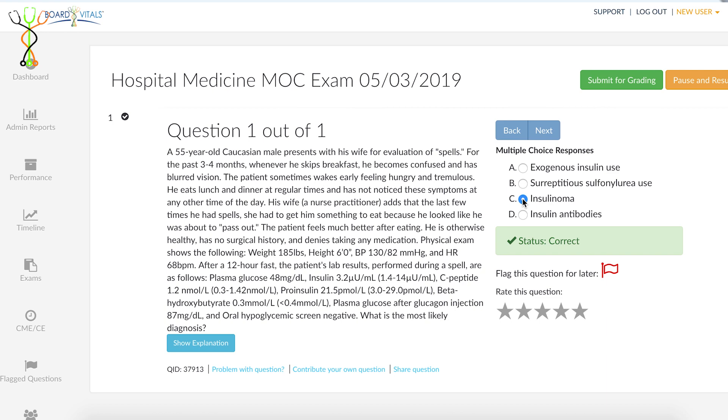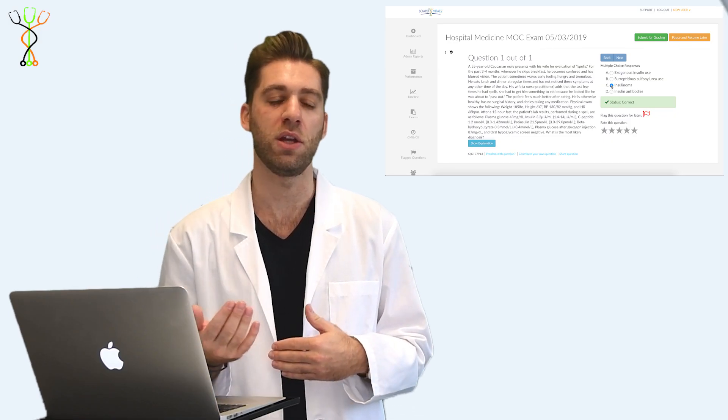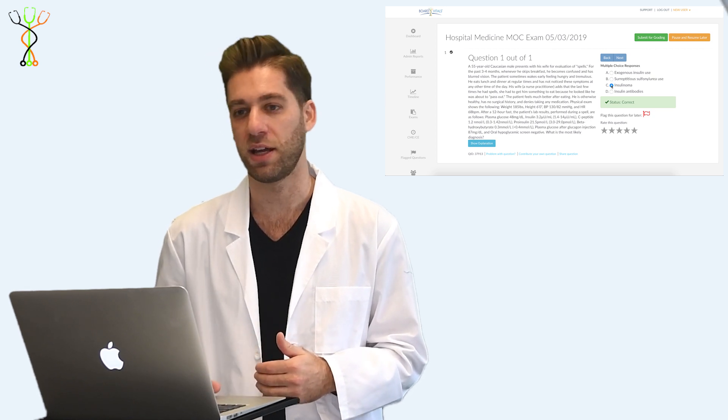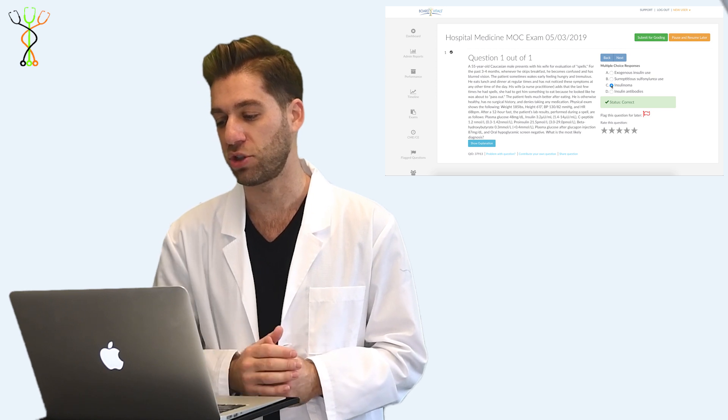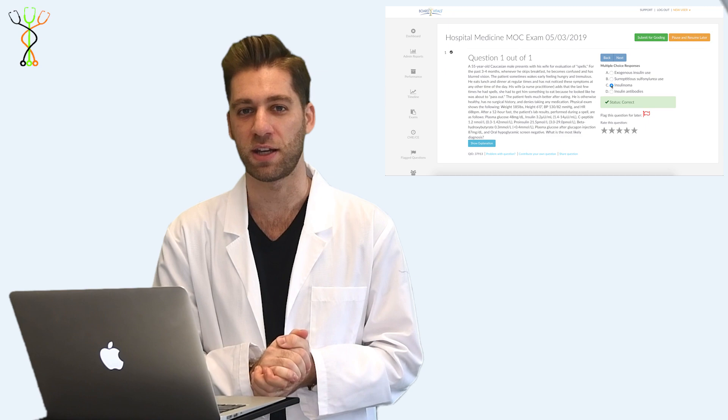Lastly, insulin antibodies such as GAD65 would be if there would be no insulin on board and seen mostly in states of type 1 diabetes which would not cause hypoglycemia. So in this case, the answer should be insulinoma C. I'm Dr. Mike Natter. I hope you'll join me again for the next question.